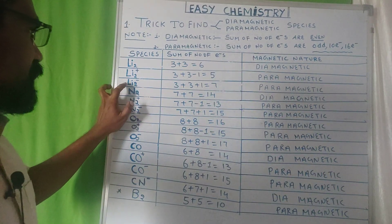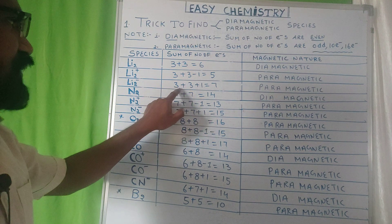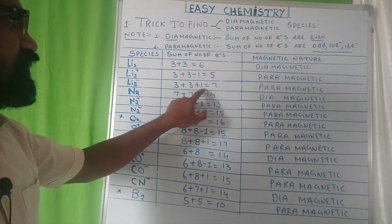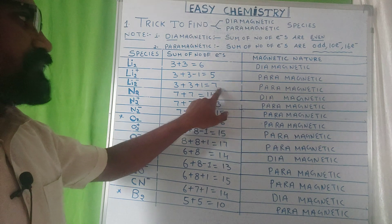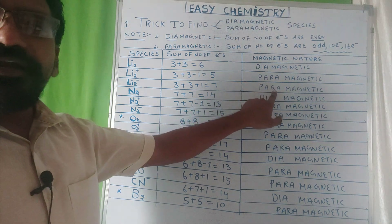If you see Li2 minus, 3 plus 3 plus 1 equals 7. It is also odd number, so it has paramagnetic nature.